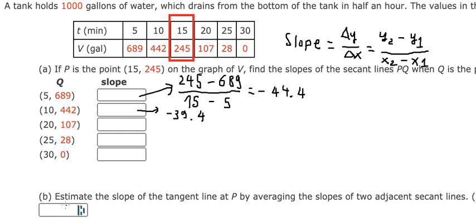Next we have 20, 25, 30. Now because 20 is after 15, we will use this number minus that number. So that should be: 107 minus 245 divided by 20 minus 15. So we got about negative 27.6.